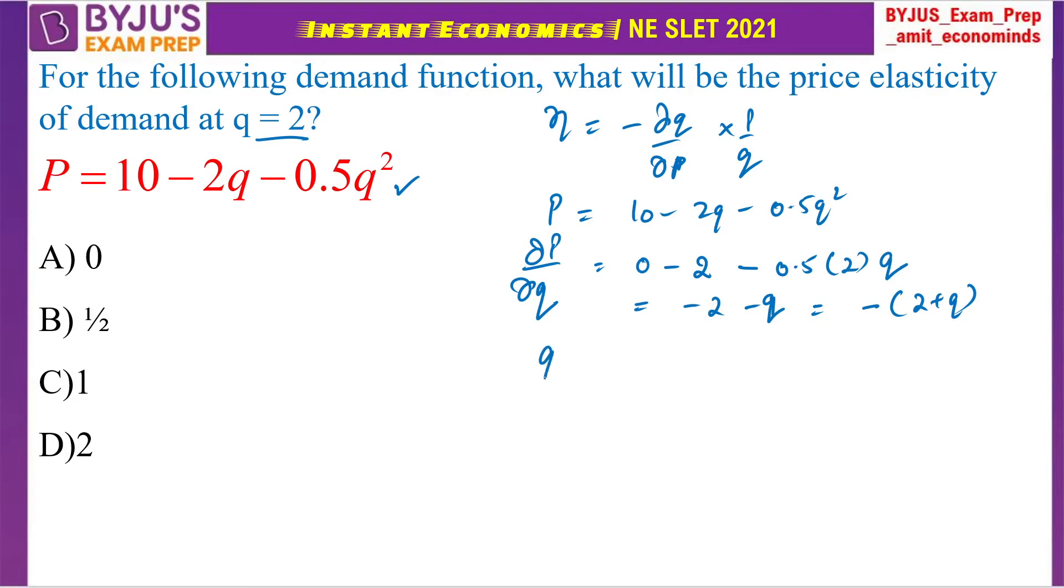Ab hamarhe paas kya hai, q ki value dhe rakki hai 2. So, yehahan peh aagar q ki value dhe lhe, then kiya hooga, yeh hooga 2 plus 2, that is minus 4.